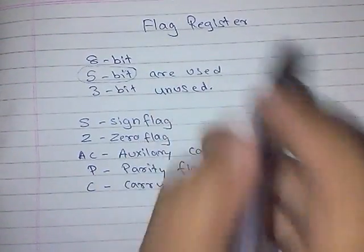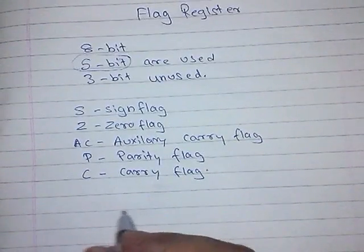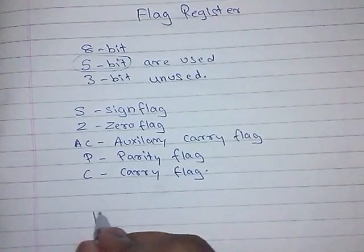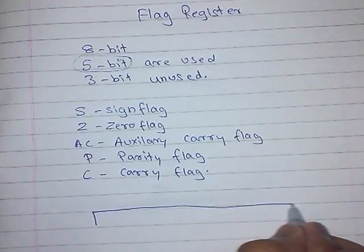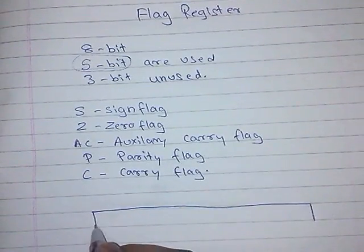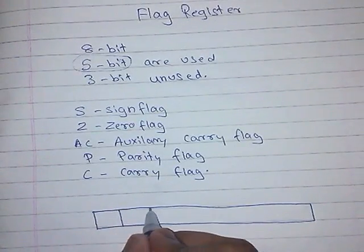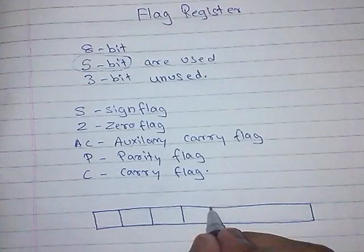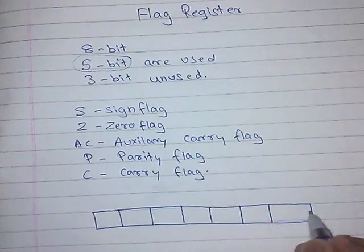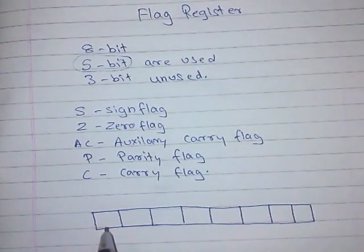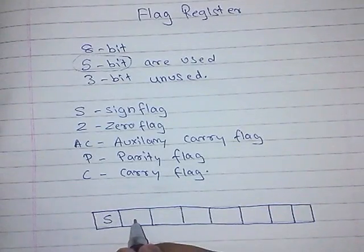The structure of flag register is like this. This is an 8 bit space. It has 8 columns: 1, 2, 3, 4, 5, 6, 7, and 8. First one is sign flag.